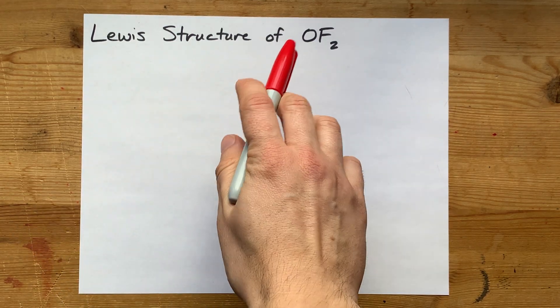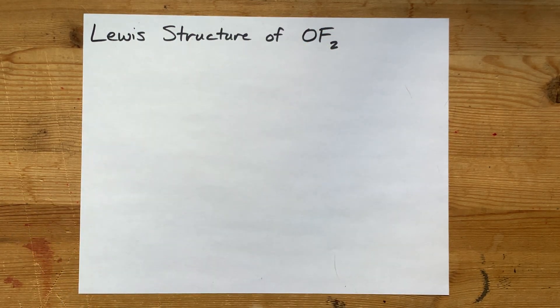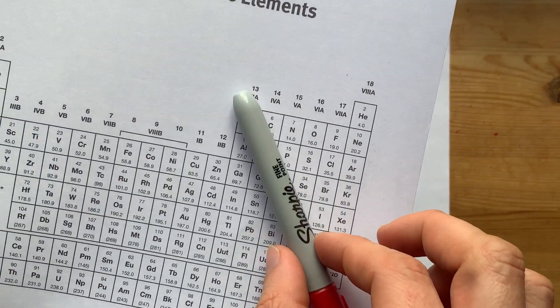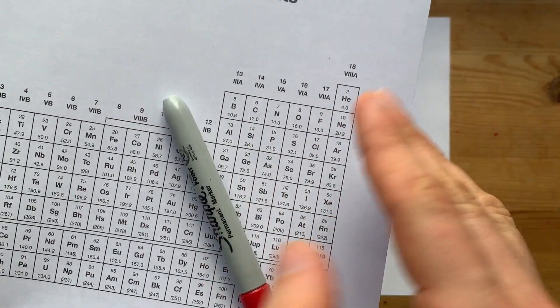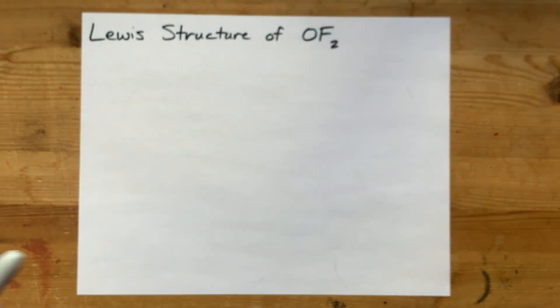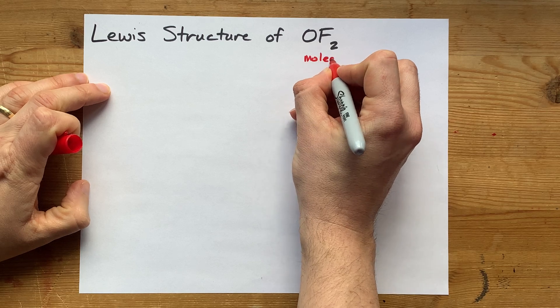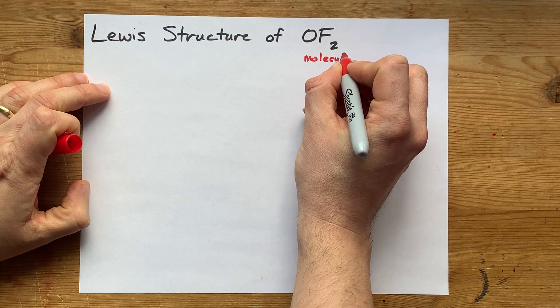We're going to draw the Lewis structure for OF2, oxygen difluoride. First thing to note is that oxygen and fluorine are both non-metals. They come from the upper right-hand side of the periodic table. When two non-metals combine, they form a molecular or covalent compound.